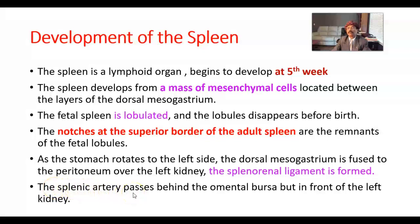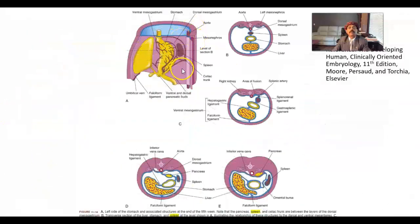The splenic artery is a branch of the celiac trunk, which is a branch of the abdominal aorta — one of the ventral branches of the abdominal aorta. It passes behind the omental bursa but in front of the left kidney. So this is the dorsal mesogastrium, and as the stomach rotates, the mesogastrium fuses to the peritoneum over the left kidney, forming the splenorenal ligament, which carries the splenic artery — the largest branch of the celiac trunk.